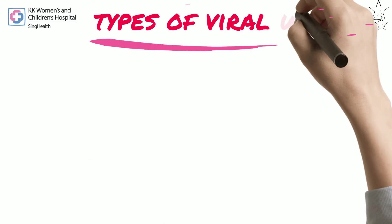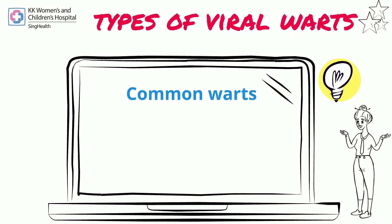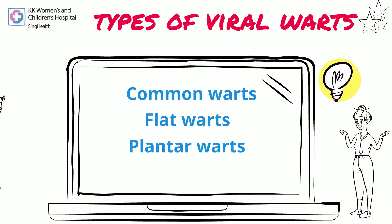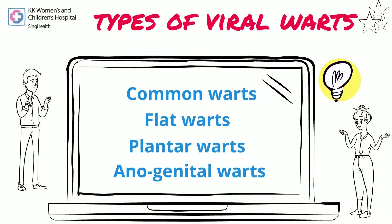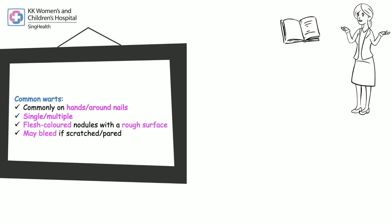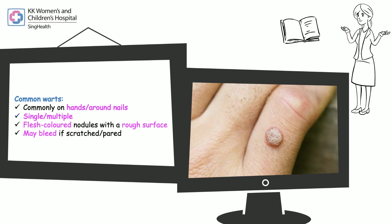Types of viral warts include common warts, flat warts, plantar warts, and anogenital warts. Common warts are commonly found on hands or around nails. They can be single or multiple. They are flesh-colored nodules with a rough surface and may bleed if scratched or pared.